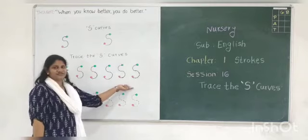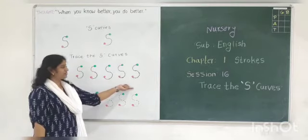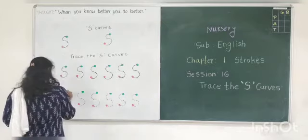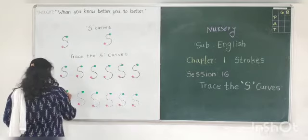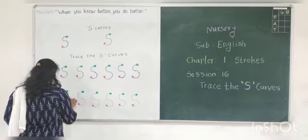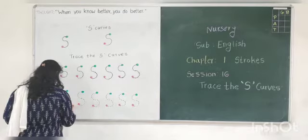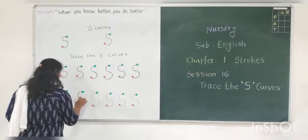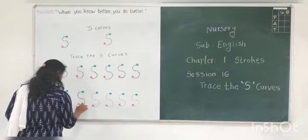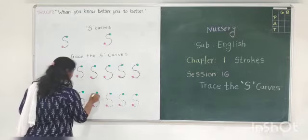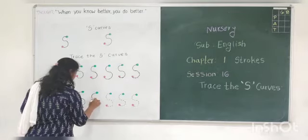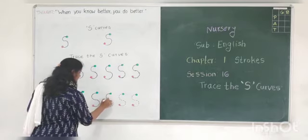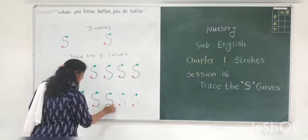See? S Curve. Now, you can see it's the S Curve. Like this, you have to complete it slowly. Because whenever you are going to press this curve, you have to go through the left curve and then the right curve.